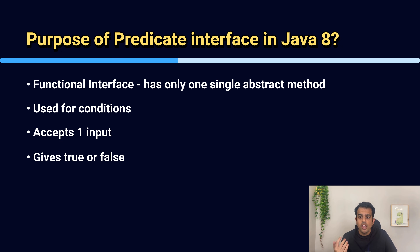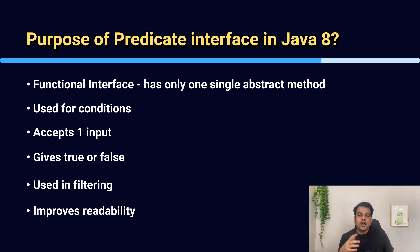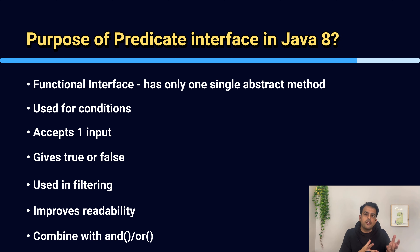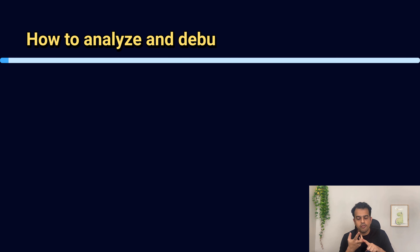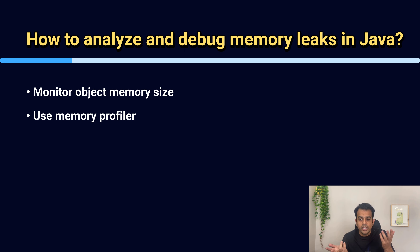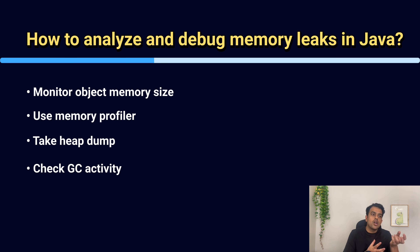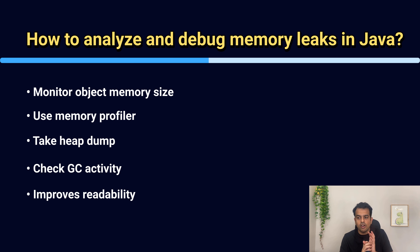The next question is: how do you analyze and debug memory leaks in Java? We check if objects are growing in memory. We use tools like VisualVM to analyze heap dumps for unused objects. We also check garbage collection activity and look for large retained memory, which helps us detect memory leaks. Common causes of memory leaks include static collections, unclosed resources — for example, if you open a DB connection and forget to close it or open any resource and forget to close it, that may be the reason for a memory leak.